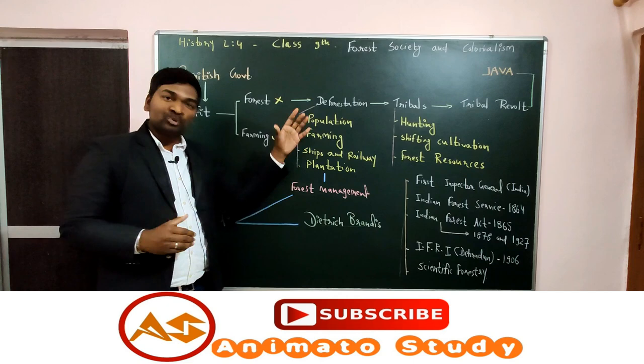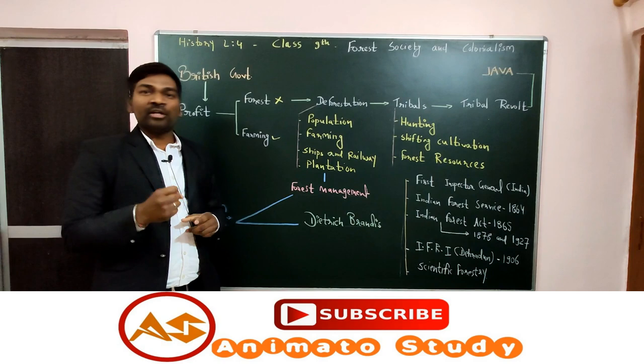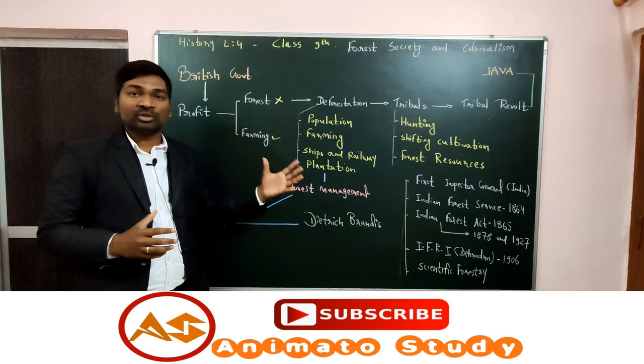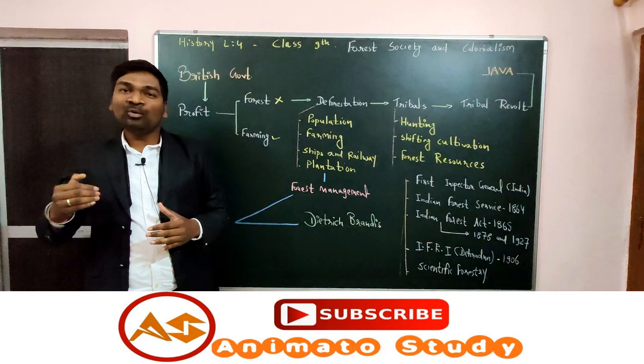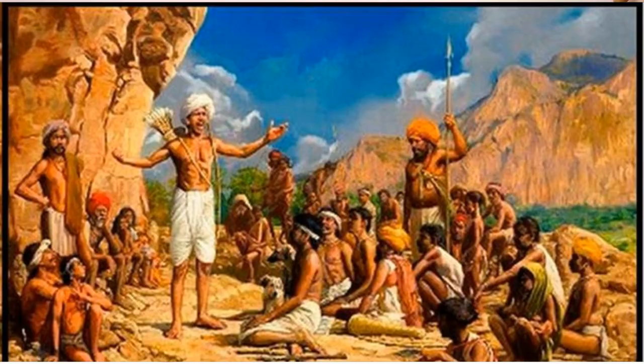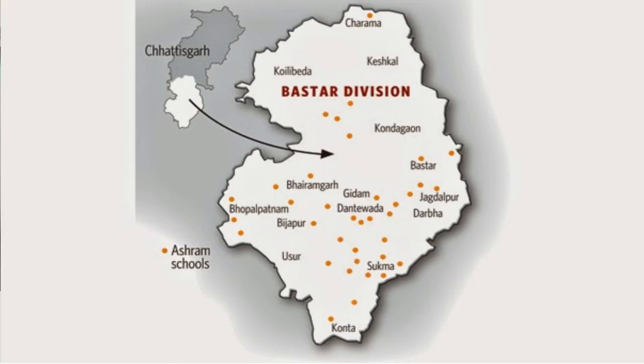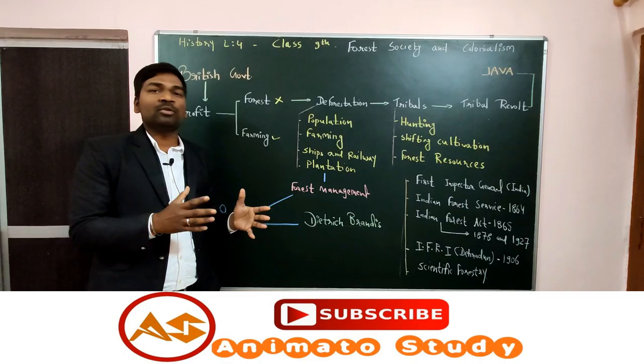With tribals unable to hunt, do shifting cultivation, or use forest resources, they had no options left — that is why they went with revolt. The next topic is tribal revolt. We will discuss the Bastar region — how the Bastar people revolted — and apart from Bastar, we will also discuss a few more regions like Andhra Pradesh and Jharkhand.